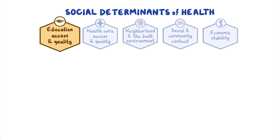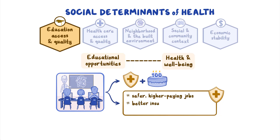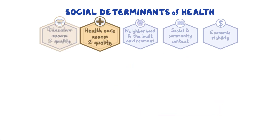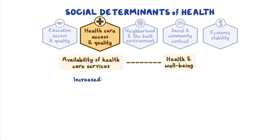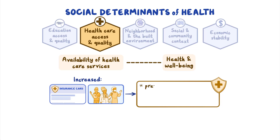Education access and quality includes the effect that educational opportunities have on people's health and well-being. People with higher levels of education are more likely to be healthier and live longer. Providing high-quality educational opportunities for children and adolescents can lead to safer, higher-paying jobs, better insurance, and access to healthier environments. Healthcare access and quality is the connection between the availability of healthcare services and health. Increasing insurance coverage and access to healthcare professionals ensures more people get important services like preventative care, treatment for chronic illnesses, and access to health information to make informed health decisions.